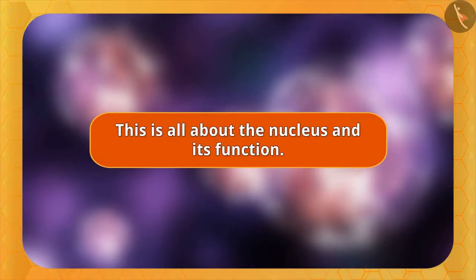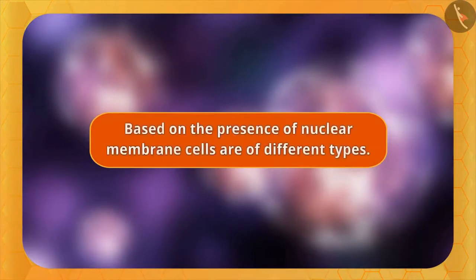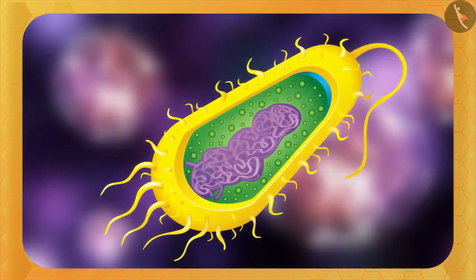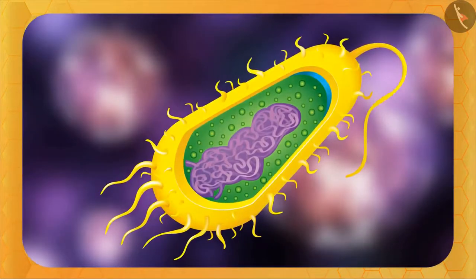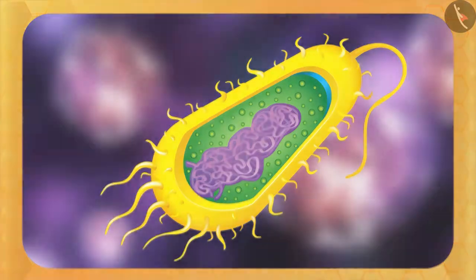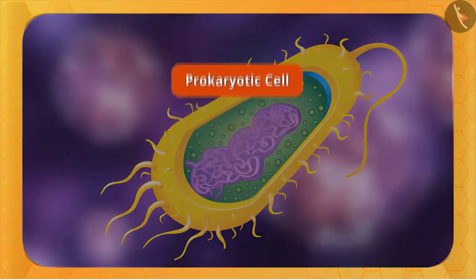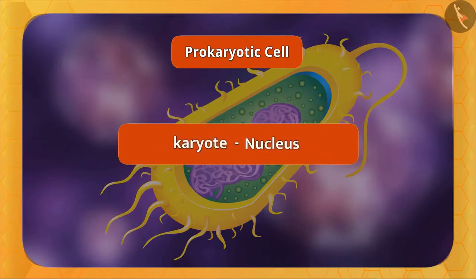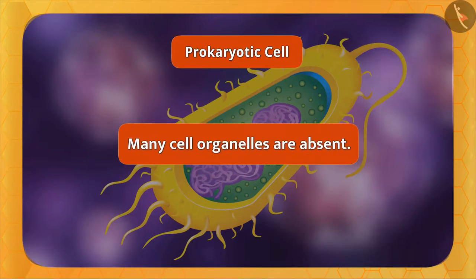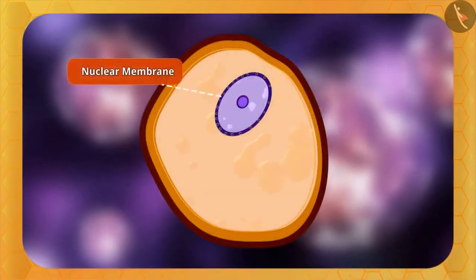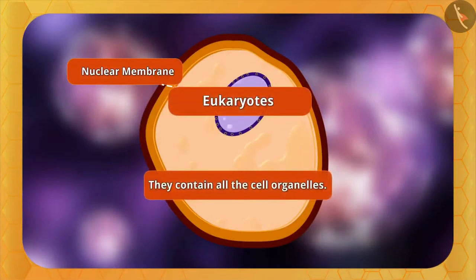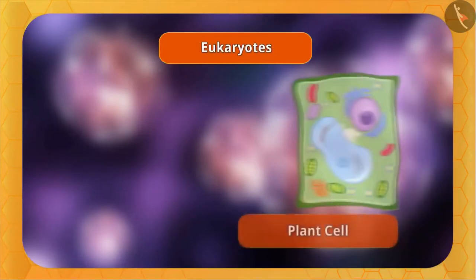This is all about the nucleus and its functions. Now, based on the presence of nuclear membrane, cells are of different types. In some organisms like bacteria, the nuclear region of the cell may be poorly defined due to the absence of a nuclear membrane. Such an undefined nuclear region containing only chromatin is called a nucleoid. Organisms whose cells lack a nuclear membrane are called prokaryotes, and we call such cells prokaryotic cells. Pro means primitive or primary, and karyote means nucleus. In these cells, many cell organelles are absent. Organisms with cells having a nuclear membrane are called eukaryotes and contain all the cell organelles — examples include plant cells and animal cells.